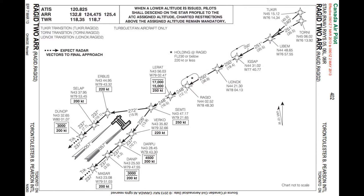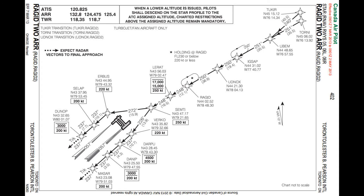The next thing I'd like to discuss is the same Ragged 2 arrival, but this time landing to the east — using runway 06L as an example. You can see altitude and speed restrictions at Lerat, a speed restriction at Verco, altitude at Darpu, and an altitude restriction at Danup. The key thing on RNAV arrivals in Canada is you must adhere to the restrictions on the chart regardless of the clearance from the controller. Unlike in the US where a clearance to 3000 feet lets you ignore previous restrictions, in Canada you must cross Lerat between 15,000 and 7,000 feet at 250 knots and continue to comply with each restriction down the line.